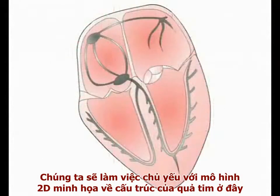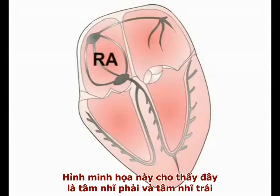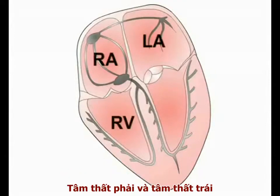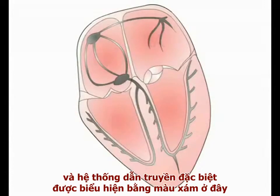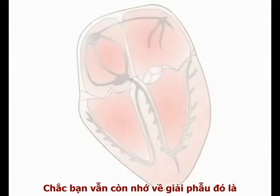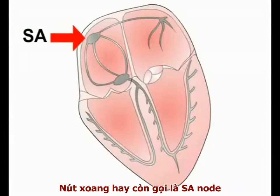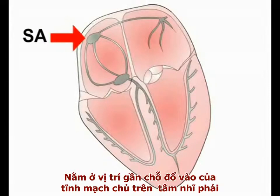We will work mainly with the 2D schematic of the heart shown here. The schematic shows the right and left atria, the right and left ventricles, and the specialized cardiac conducting system seen here in grey. The main components of the conducting system are the sinoatrial, or SA, node, situated near the entry of the superior vena cava into the right atrium.